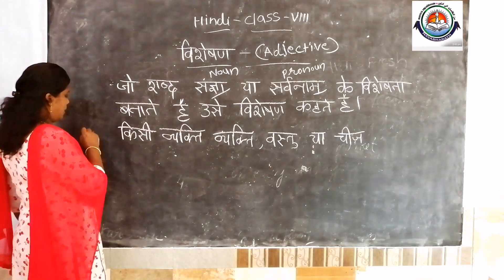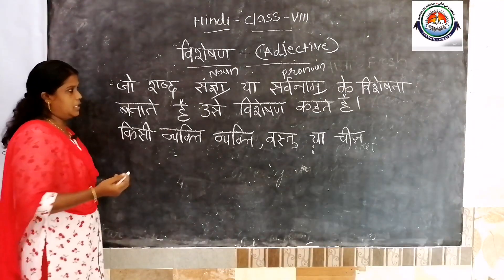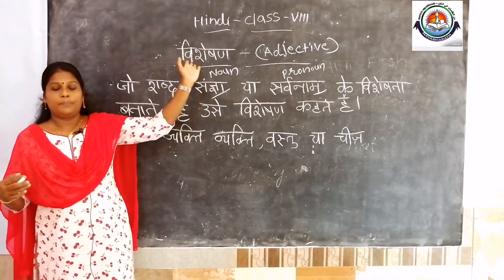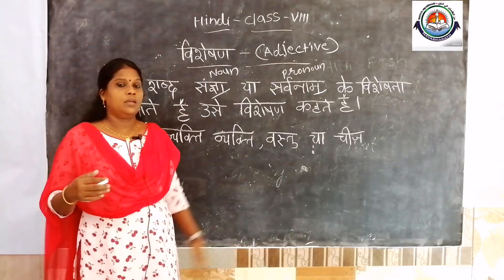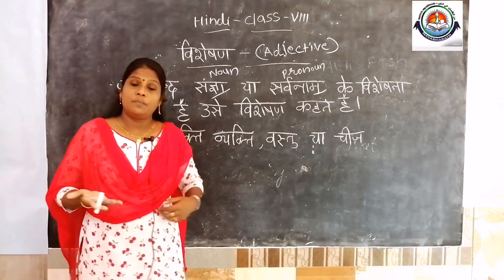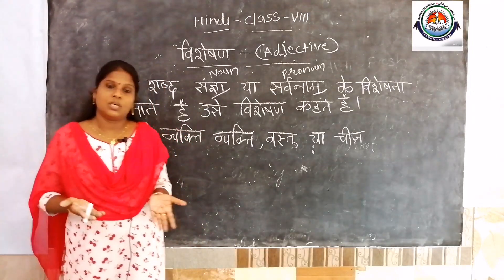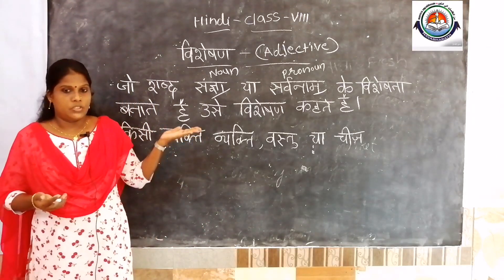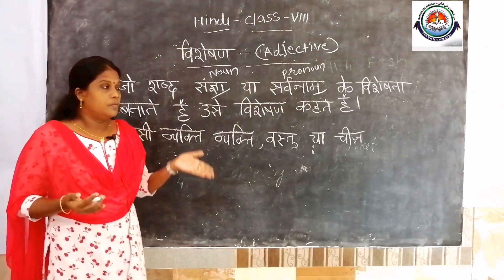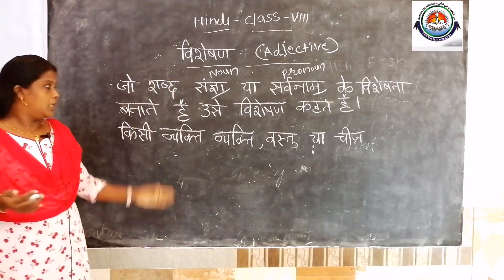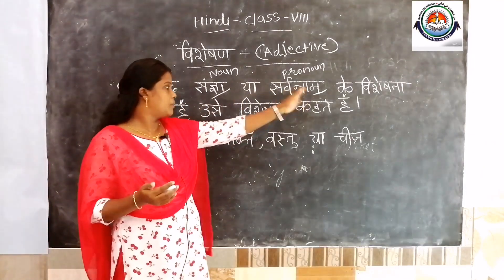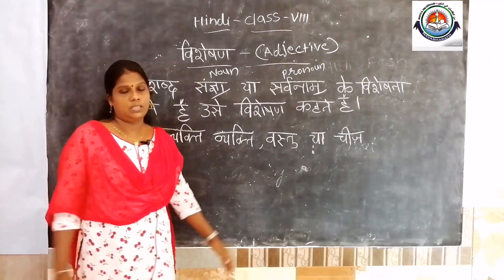Sankhya and sarvanam — we have already explained those. Now look at vishishan. Vishishan means adjective. Very easily we can say: the describing word of a noun is called an adjective. Jo shabd sankhya ya sarvanam ki visheshata batate hain, use vishishan kahte hain.